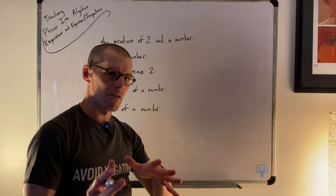'Of' always implies multiplication. Here we have a percent: '25% of a number.' Recall from arithmetic how to rewrite percents as decimals — move the decimal point two steps left. 25% becomes 0.25. So 25% of a number is 0.25 times our number x, or 0.25x.